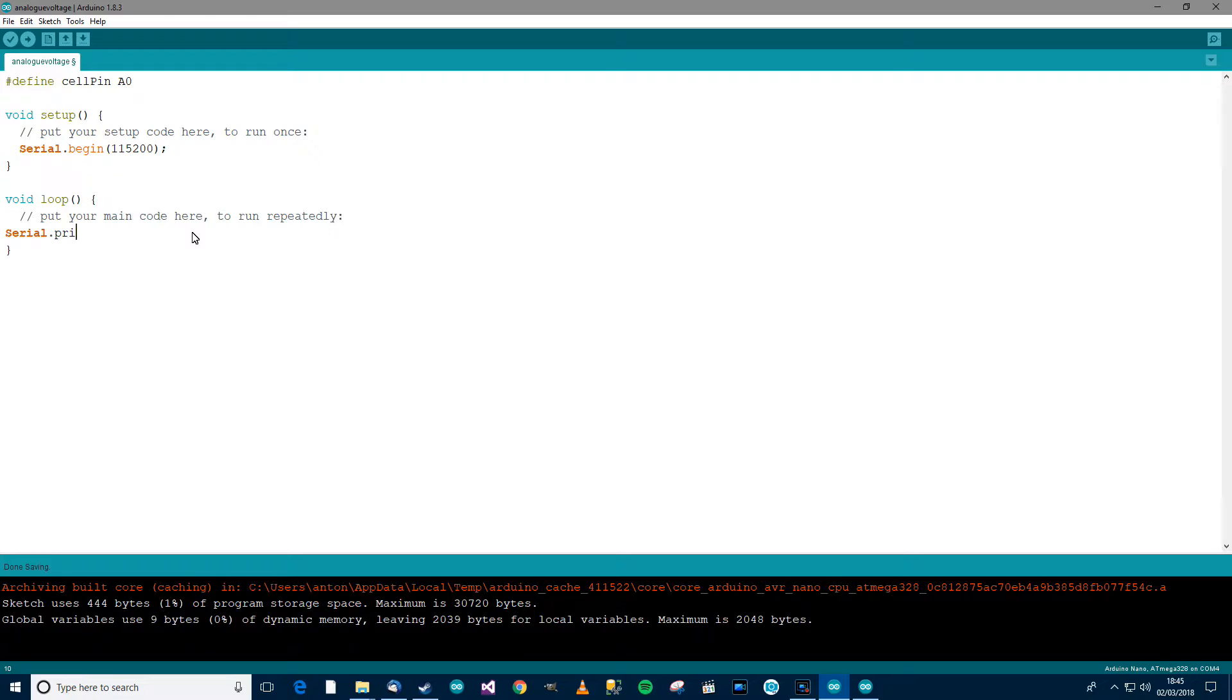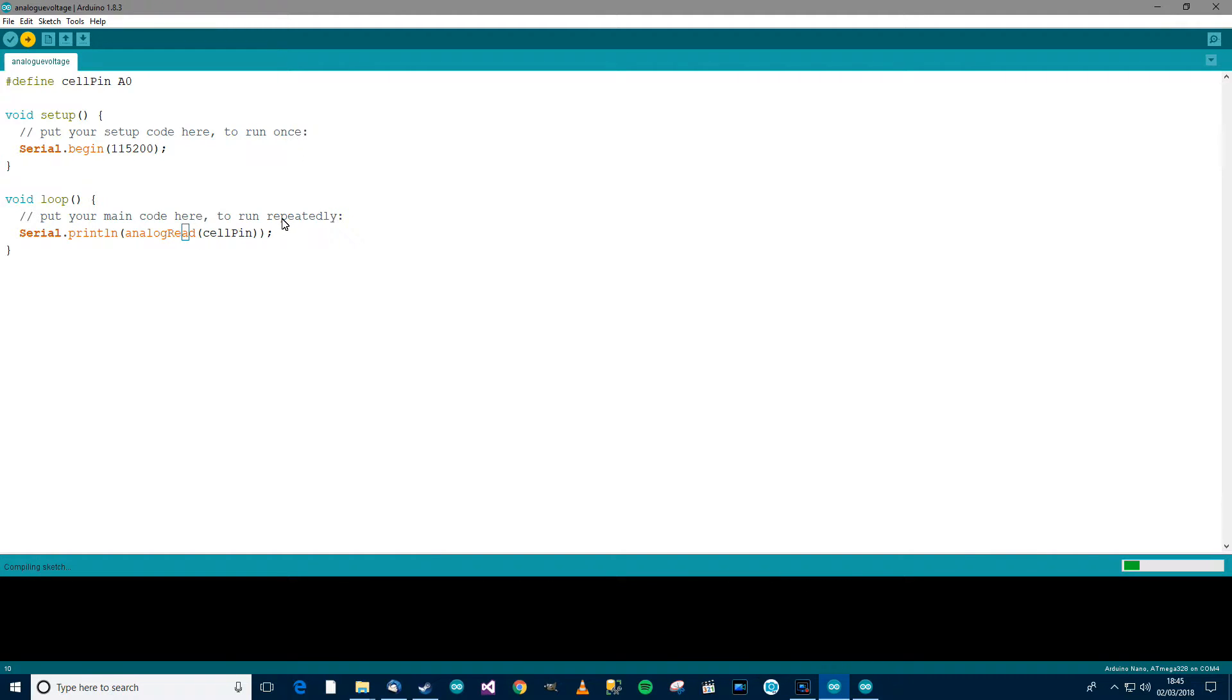Serial.println, open close parenthesis. Then in here, analogRead, open close parenthesis, cell pin. Ctrl T, ctrl S, and ctrl U. So this should upload to the Arduino now, of course, all being well.